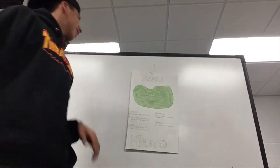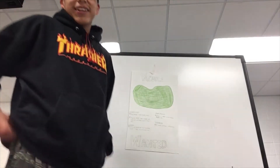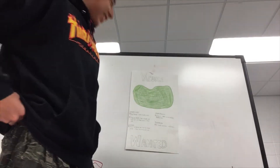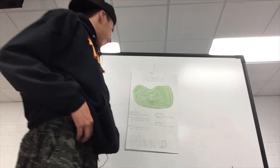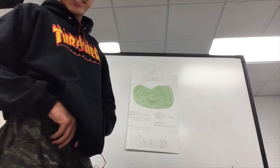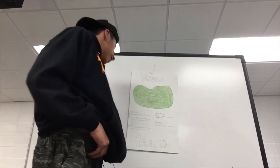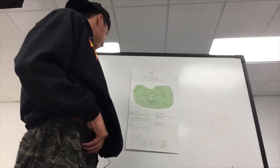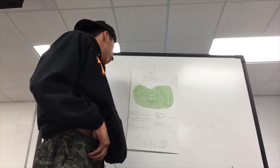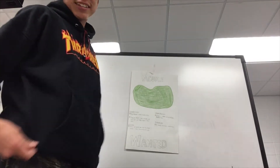The vacuole organelle function is stored in bubbles found in cells. They are found in both animal and plant cells, but much larger in plant cells.